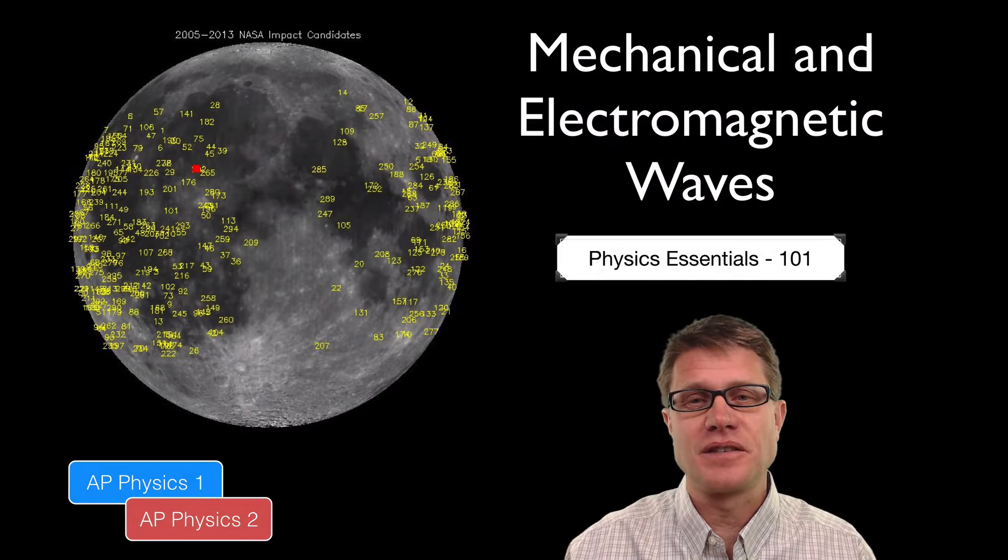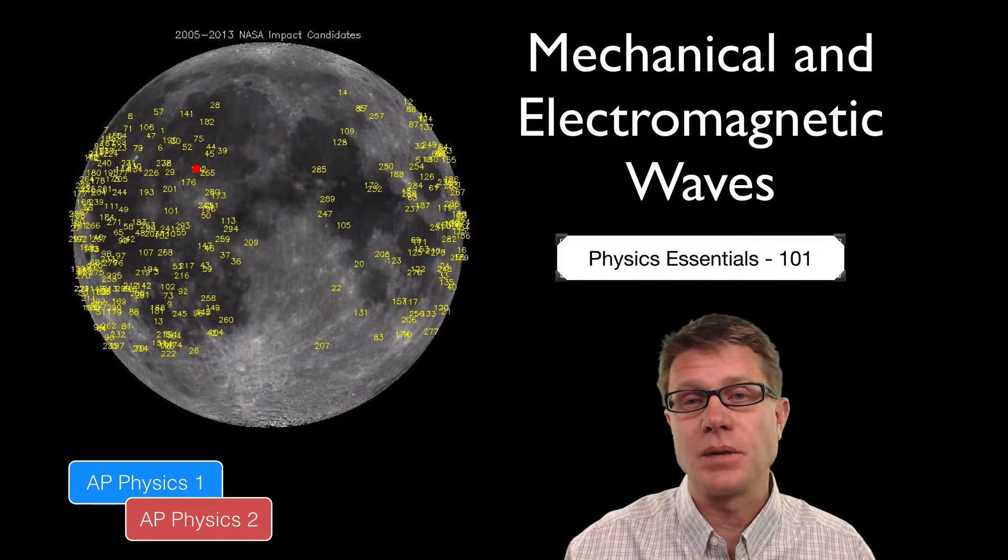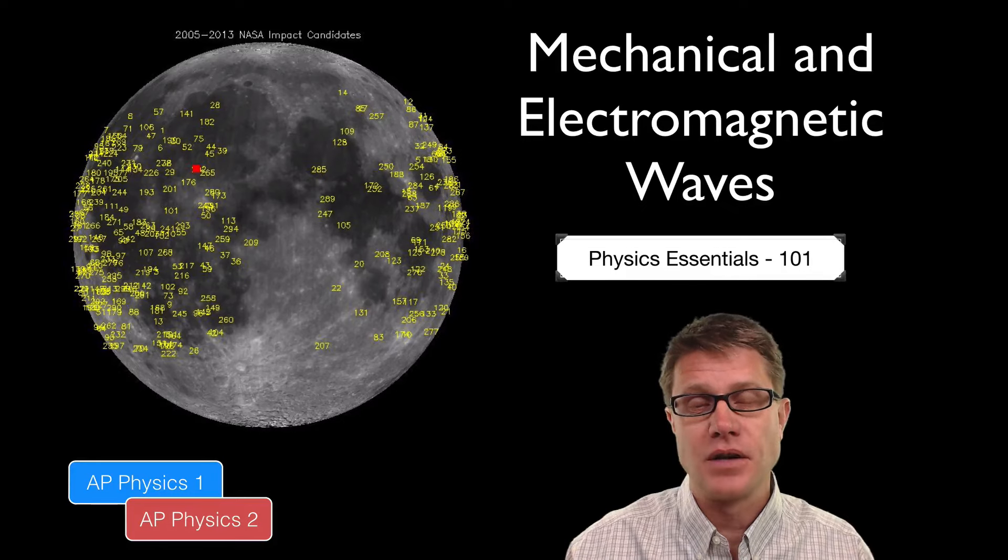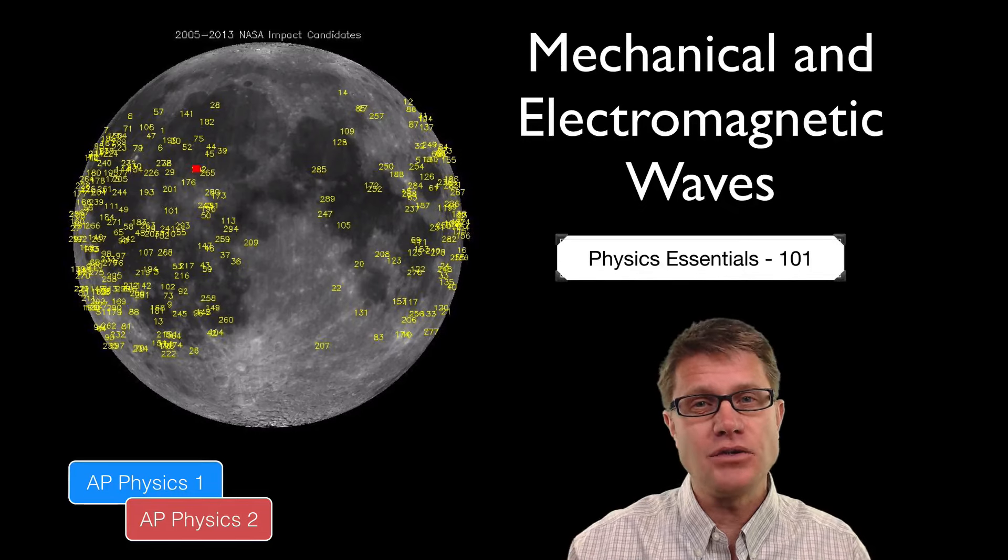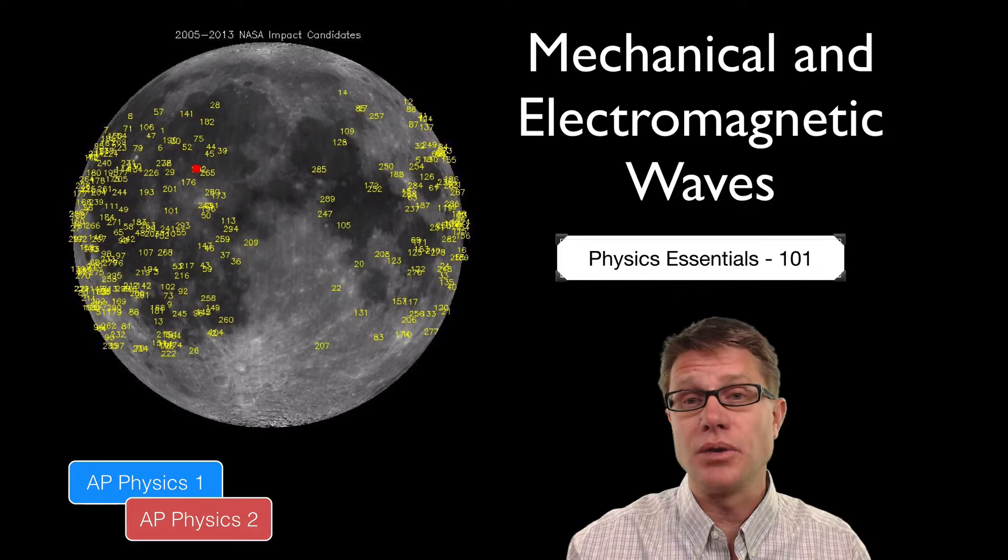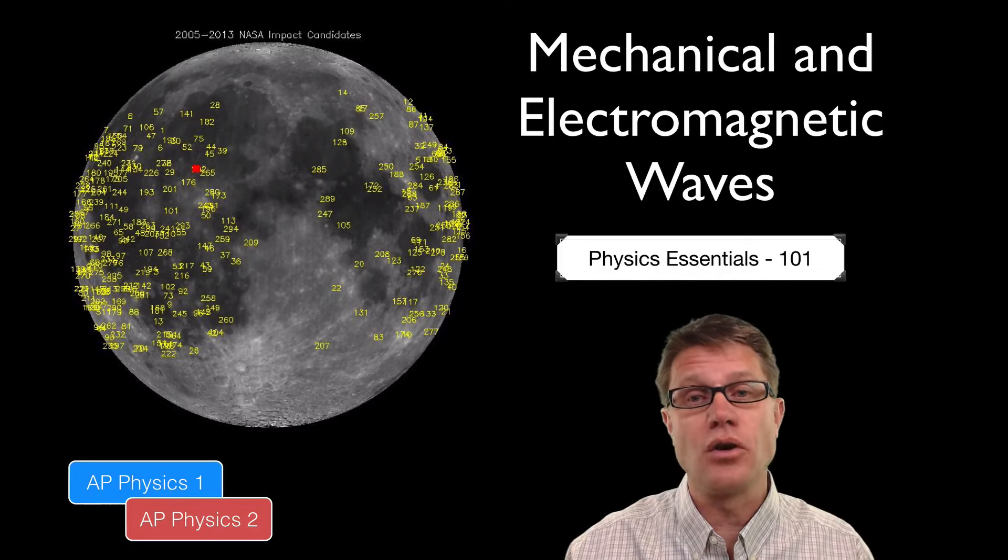Hi, it is Mr. Andersen and this is AP Physics Essentials video 101. It is on mechanical and electromagnetic waves. A good way to contrast these is to figure out can they be transmitted through space, through an area where there is no medium or no matter.